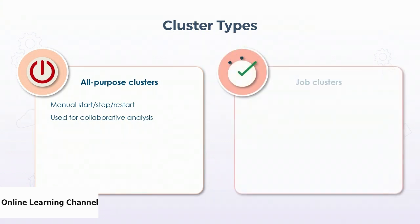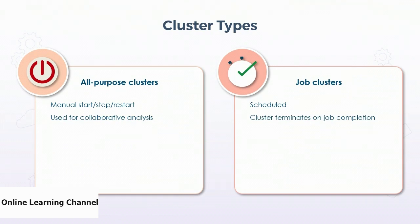Then there are job clusters. A job cluster is not managed manually. Instead, it's scheduled as part of a job. Its lifecycle is equivalent to the job's lifecycle — when the job starts, the cluster starts, and when the job completes, the cluster terminates. Where all-purpose clusters can be restarted and hence reused, job clusters cannot be restarted. They're not usable once the job they're associated with is complete. Job clusters help guarantee dedicated resources for important scheduled jobs.